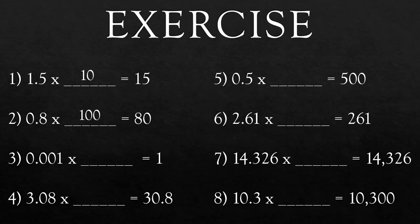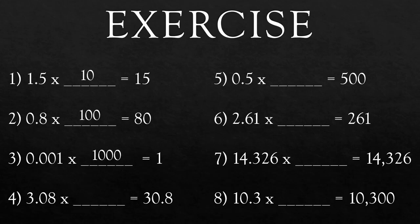Question 3: 0.001 × ___ = 1. How many places will you shift in 0.001 to get 1? 3. So what will you multiply? Yes, the answer is 1000. Question 4: 3.08 × ___ = 30.8. How many places will you shift in 3.08 to get 30.8? Yes, 1. So what will you multiply? Yes, the answer is 10.